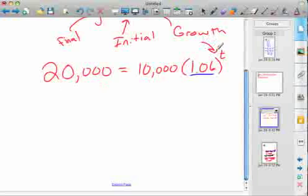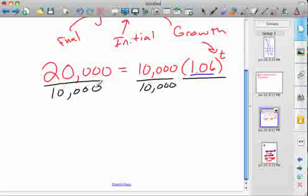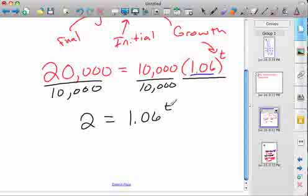If you remember those four important things you need to know about logarithms, t, or an exponent, is always the inverse of a logarithm. So what we're going to do here is isolate this exponential value, divide both sides by 10,000. So 20,000 divided by 10,000 is 2, and 1.06 is still to the t power.